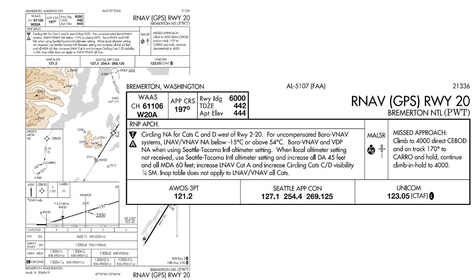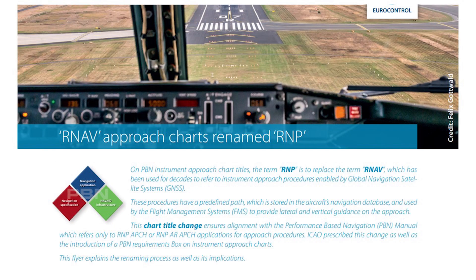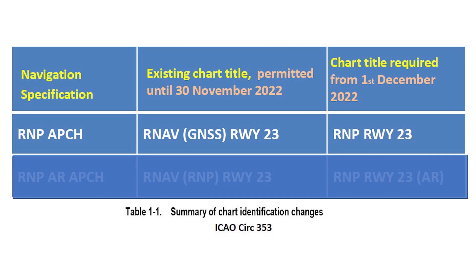But if that RNP APPROACH note doesn't change the long-established requirements, why has the FAA added it to familiar RNAV GPS approach charts? The answer depends in part on another set of letters: ICAO. The International Civil Aviation Organization decided many years ago, and for several good reasons, to adopt a new naming scheme as the shift to PBN gained momentum. By the end of 2022, most ICAO member countries will change the titles of RNAV approaches to reflect the fact that PBN procedures are based on NAV specs, not specific technologies.